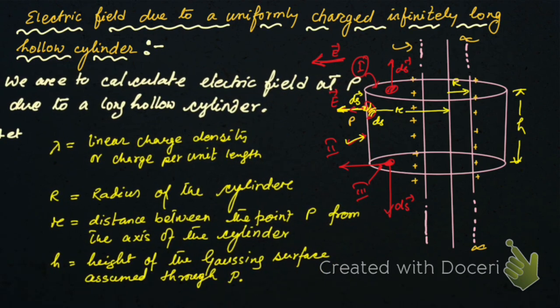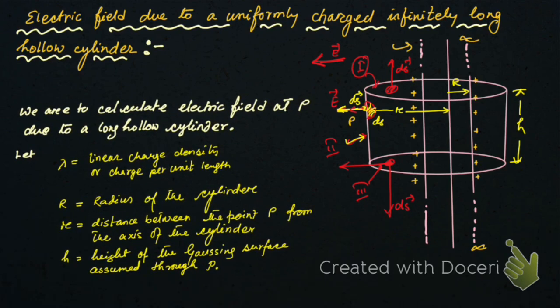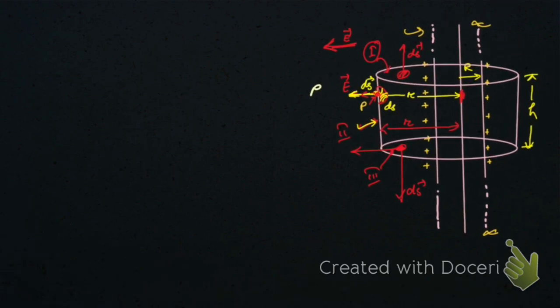Let me write what we have assumed. Lambda (λ) is the linear charge density, capital R is the radius of the cylinder, small r is the distance from point P to the axis of the cylinder — also the radius of the Gaussian surface — and h is the height of the Gaussian surface.